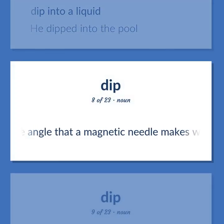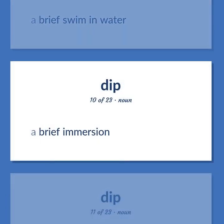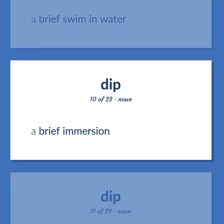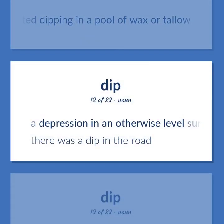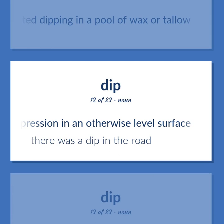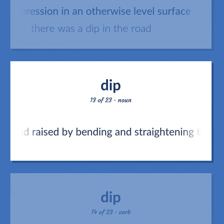Physics: the angle that a magnetic needle makes with the plane of the horizon. A brief swim in water. A brief immersion. A candle that is made by repeated dipping in a pool of wax or tallow. A depression in an otherwise level surface — there was a dip in the road.